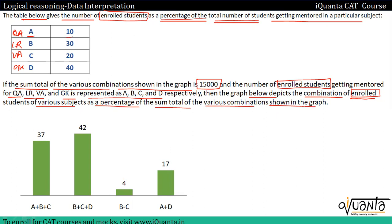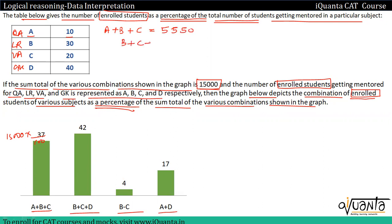Now we have a+b+c value: that is 15,000 into 37 divided by 100 — which is 37 percent. The graph total sums to 100, so using the calculator: 150 into 37 equals 5550. Similarly, b+c+d gives us 42 into 150, that is 6300.